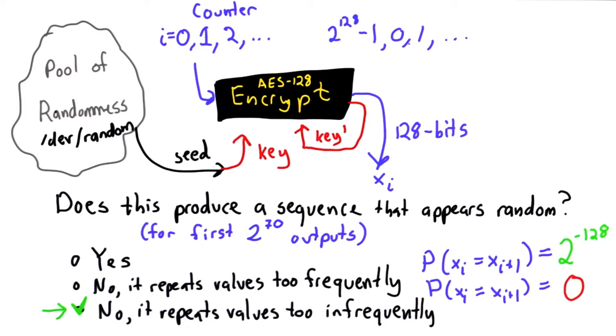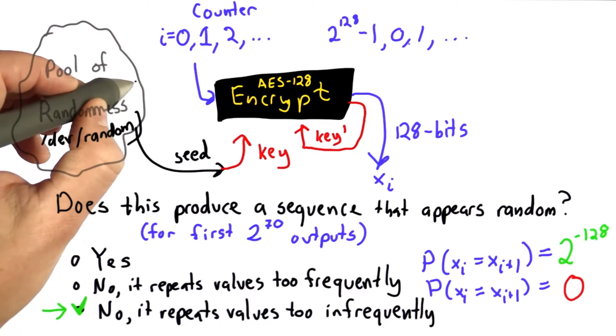There's some risk that these could be compromised, that some of them could be controlled or at least predictable to the attacker. We want to have multiple pools of randomness and combine them in a way that makes it very difficult for an attacker to control this seed.